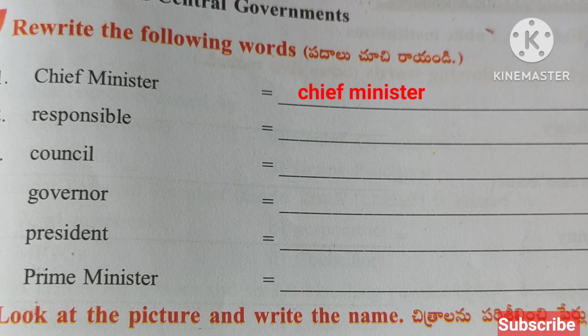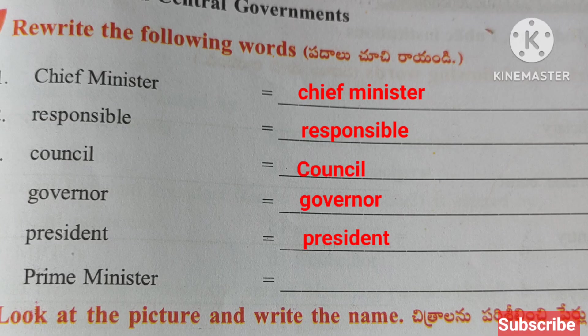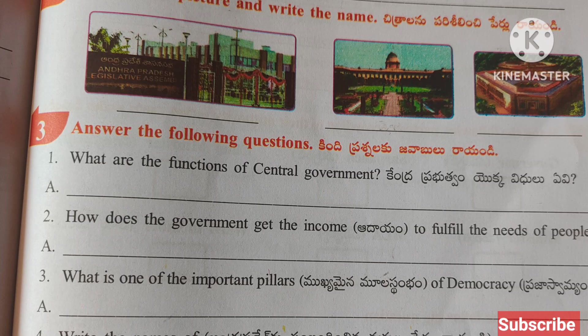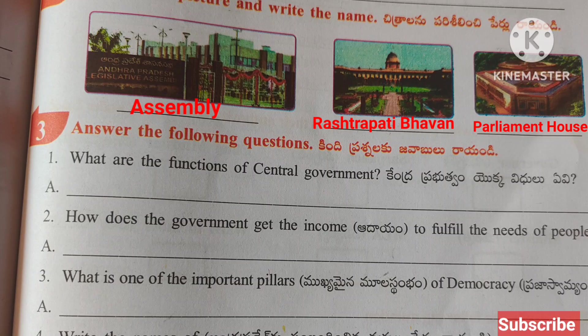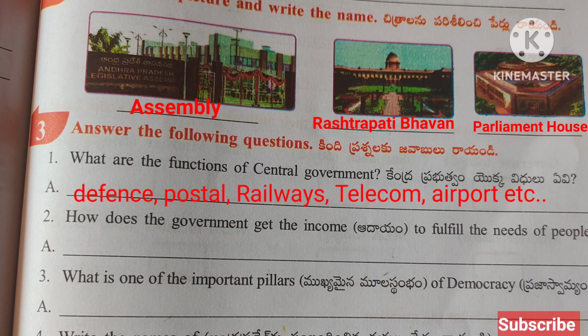Worksheet Four: Rewrite the following words — Chief Minister, responsible, council, Governor, President, Prime Minister. Look at the picture and write the name: Assembly, Rashtrapati Bhavan, Parliament House. Answer the following questions: What are the functions of Central Government? Defense, postal, railways, telecom, airport etc. are the functions of Central Government.